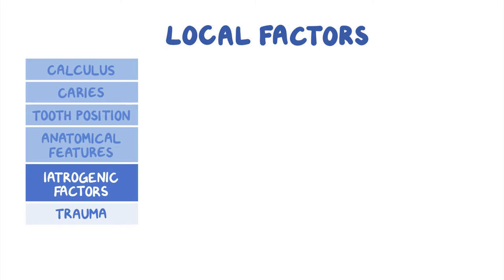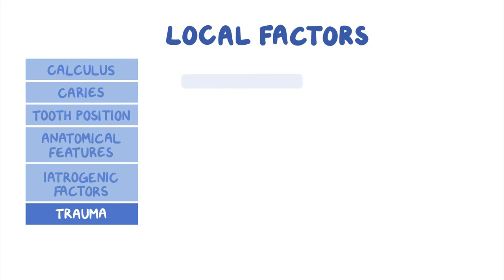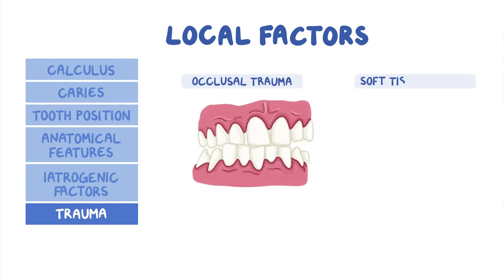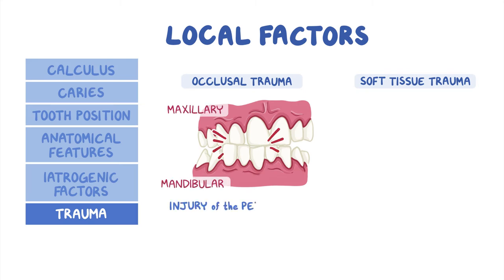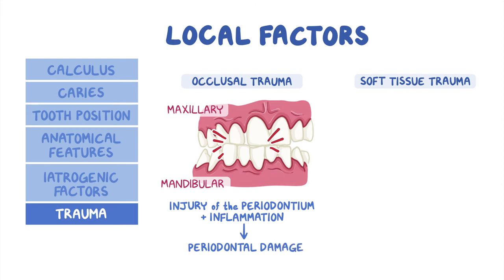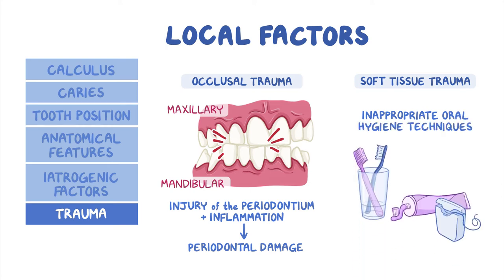The last main local factor associated with increased risk of periodontitis is trauma, such as occlusal trauma or soft tissue trauma. Occlusal trauma occurs when the maxillary and mandibular teeth exert force on each other, resulting in injury to the periodontium. In combination with inflammation, occlusal trauma can result in periodontal damage. Soft tissue trauma is typically associated with inappropriate oral hygiene techniques, such as vigorous brushing and flossing.